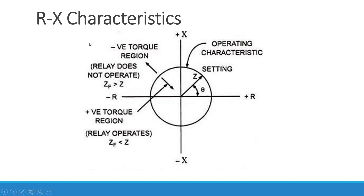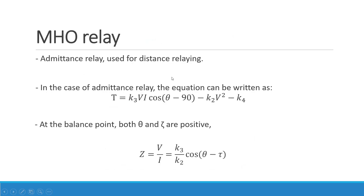From these characteristics you can observe that distance relays are inherently non-directional — the relay will operate for both forward and reverse directions. In order to overcome this, a different type of relay called the Mho relay has been developed. There is also another solution which involves using a directional element in series with the distance element.